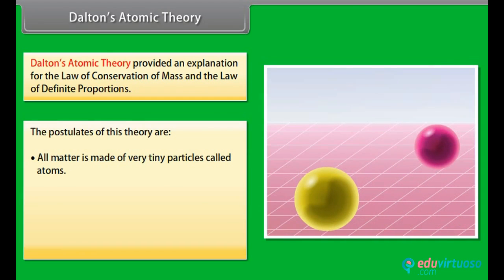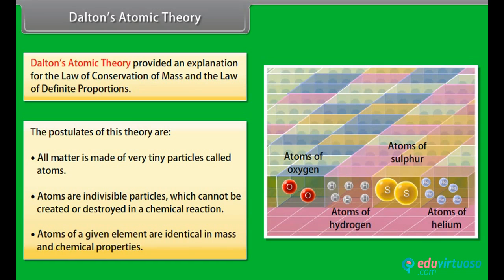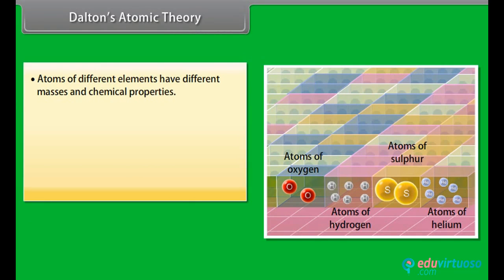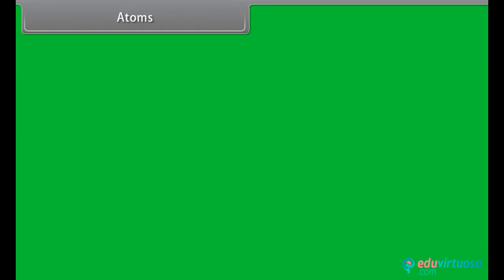1. All matter is made of very tiny particles called atoms. 2. Atoms are indivisible particles which cannot be created or destroyed in a chemical reaction. 3. Atoms of a given element are identical in mass and chemical properties. 4. Atoms of different elements have different masses and chemical properties. 5. Atoms combine in the ratio of small whole numbers to form compounds. 6. The relative number and kinds of atoms are constant in a given compound.